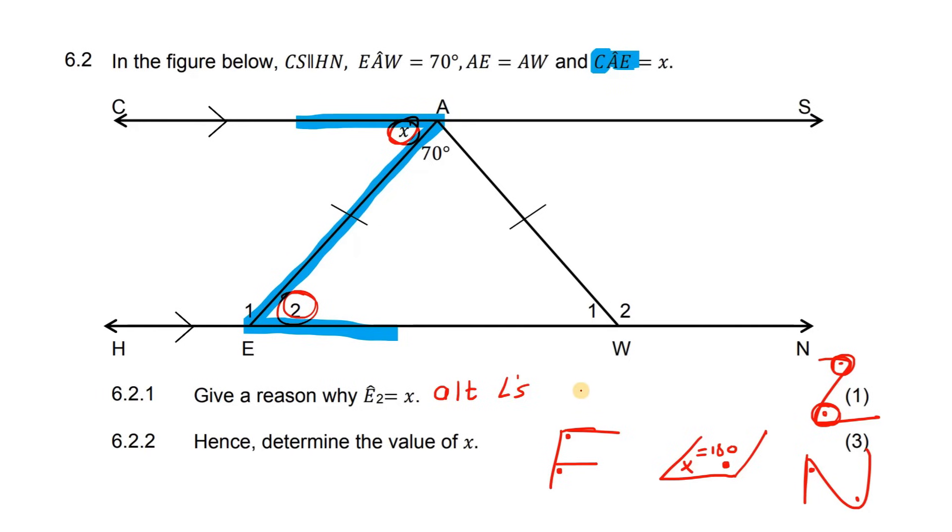And that is because the line CS is parallel to HN. So we're saying alternating angles. Remember, the Z or the N is called alternating.